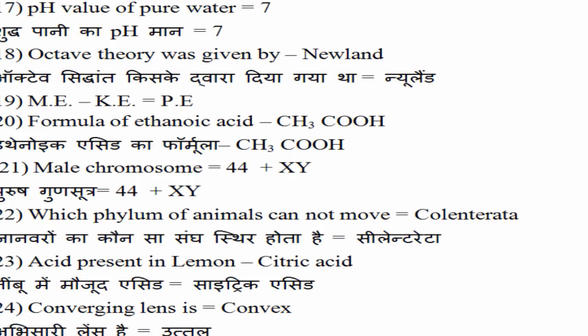Ethanoic acid का formula CH3COOH. Male chromosomes — पुरुष गुण सूत्र — की हम कैसे denote करते हैं. तो 44 में जब हम X और Y जोड़ देंगे तो हमारे ये male गुण सूत्र बन जाएगा. 22वाँ question: कौन सा phylum अपनी जगह से नहीं हिल सकता है — Coelenterata. Coelenterata अपनी जगह से नहीं हिल पाते, example है हमारा Hydra.